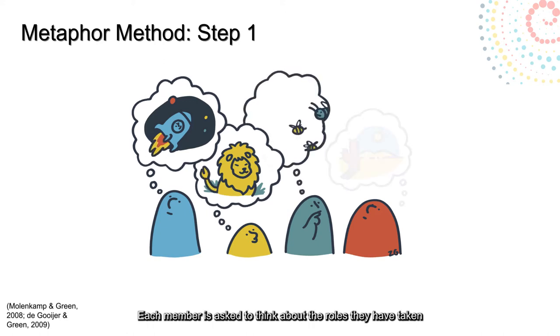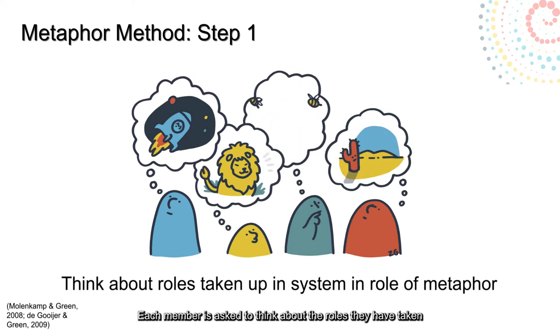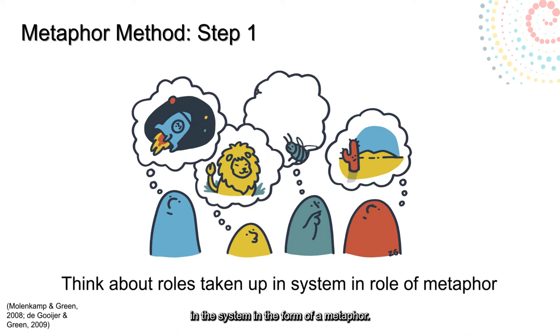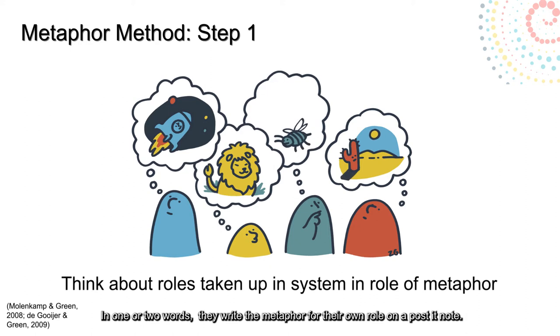In the first step, each member is asked to think about the roles they have taken up in the system in the form of a metaphor. In one or two words, they write the metaphor for their own role on a post-it note.